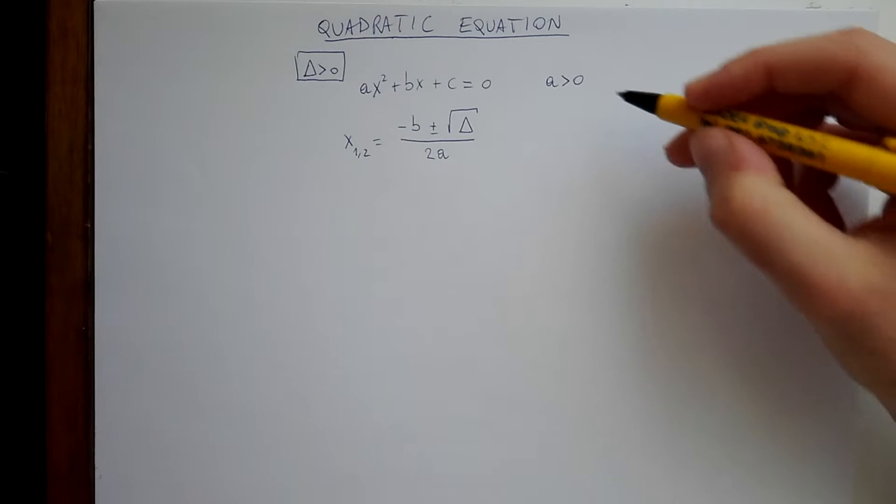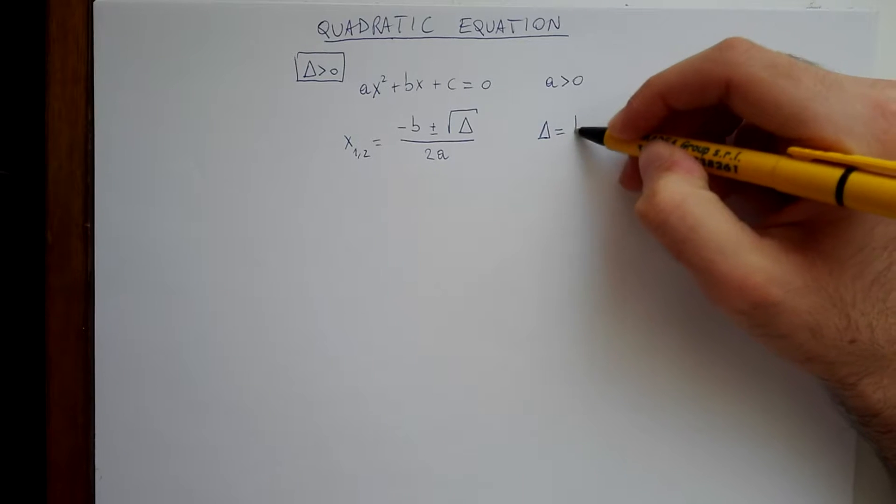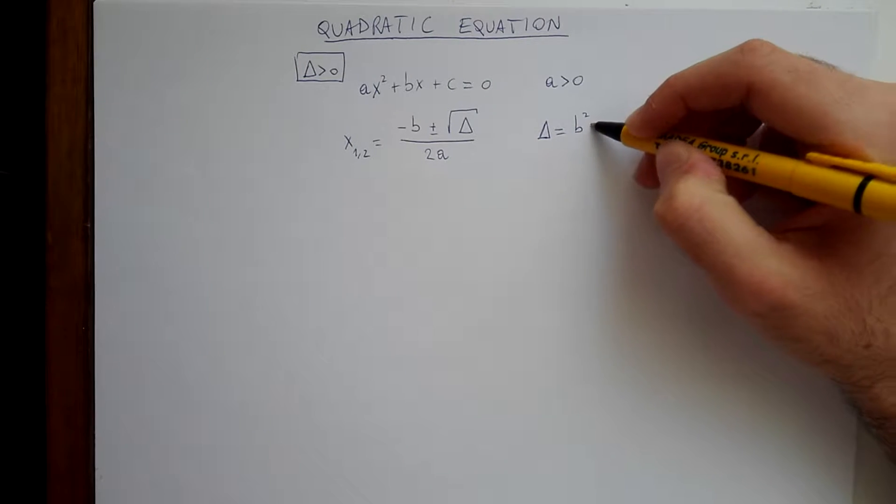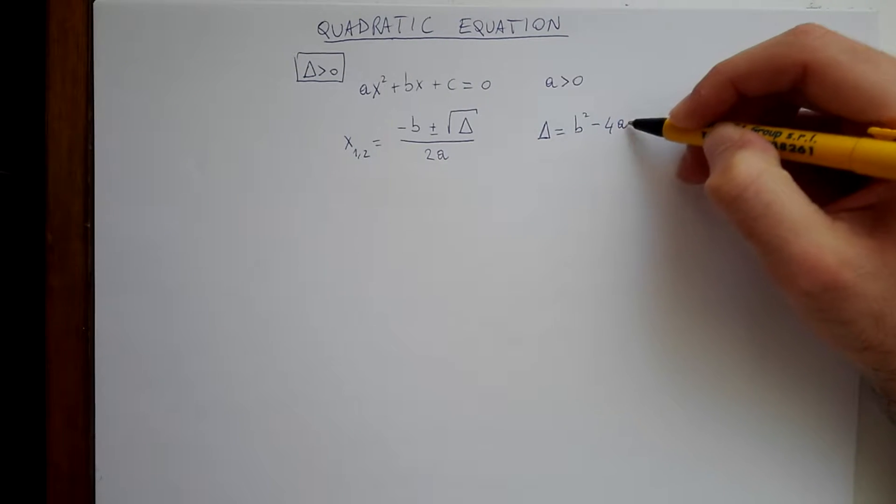where this delta is b squared minus 4ac.